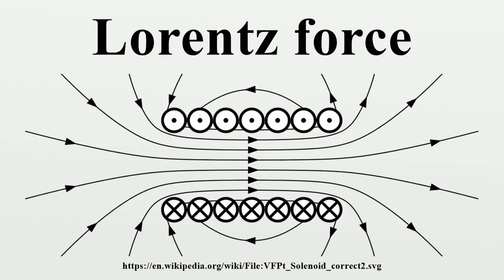Note that the fields are defined everywhere in space and time with respect to what force a test charge would receive regardless of whether a charge is present to experience the force. Note also that as a definition of E and B, the Lorentz force is only a definition in principle, because a real particle would generate its own finite E and B fields, which would alter the electromagnetic force that it experiences. In addition, if the charge experiences acceleration, as if forced into a curved trajectory by some external agency, it emits radiation that causes braking of its motion — see for example Bremsstrahlung and synchrotron light. These effects occur through both a direct effect and indirectly. Moreover, net force must include gravity, electroweak, and any other forces aside from electromagnetic force.